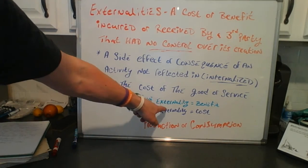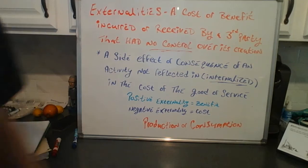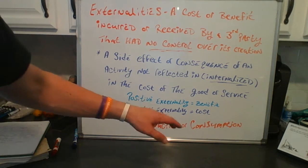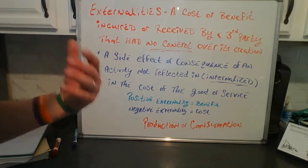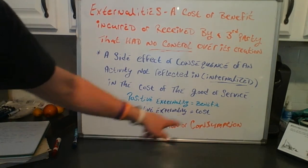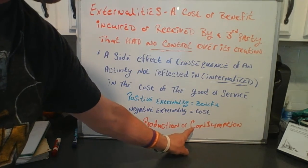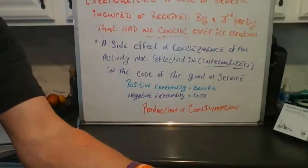Another definition: it's a side effect or consequence of an activity not internalized — not taken into account in the cost of the good or service. You can have two kinds: if it's a positive externality somebody's getting a benefit; if it's a negative externality somebody's incurring a cost. Whether it's positive or negative, it can be a result of production or consumption — it happens when somebody makes something or when somebody buys something.